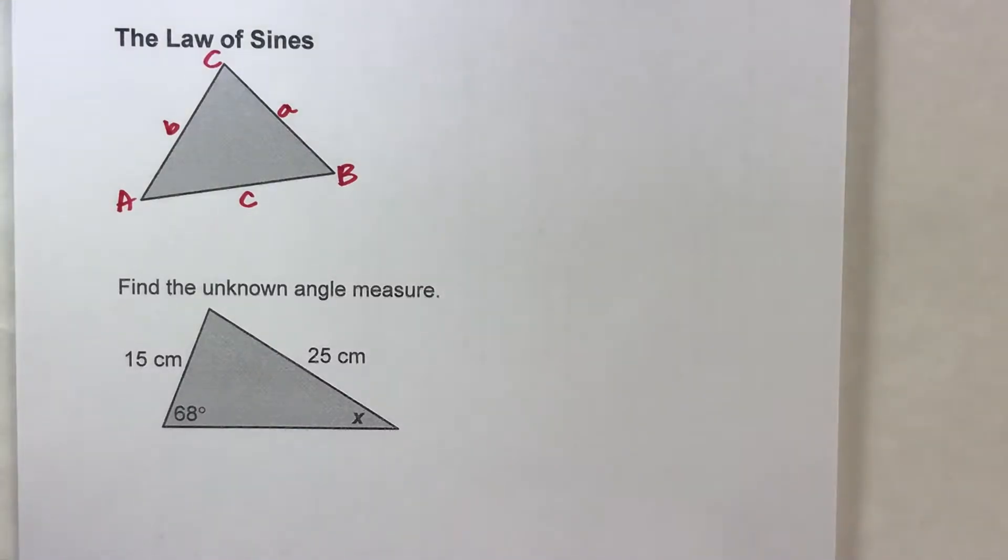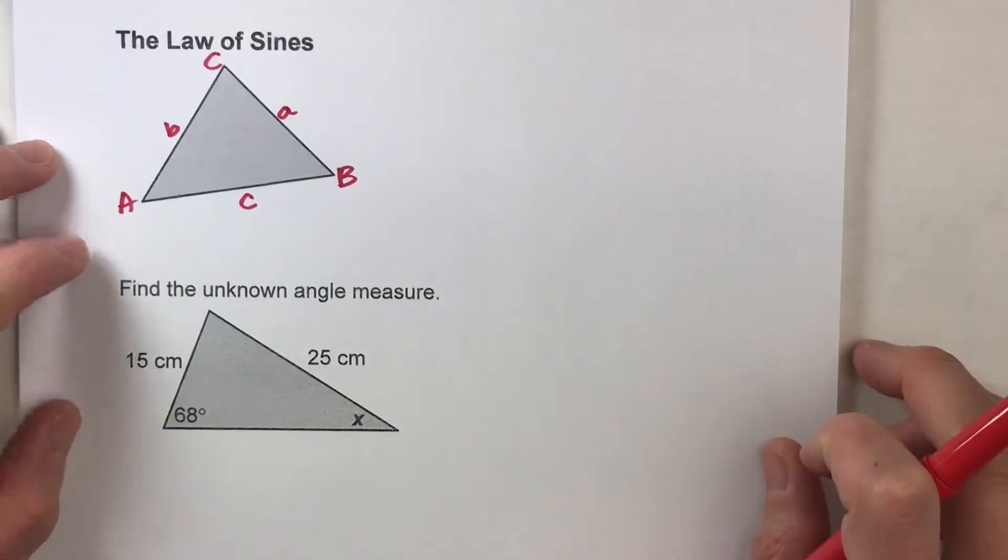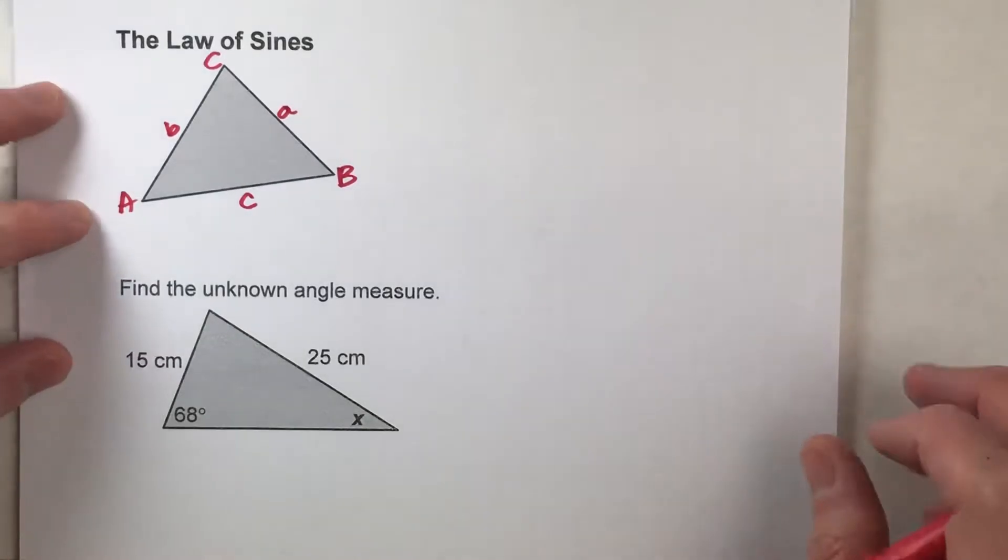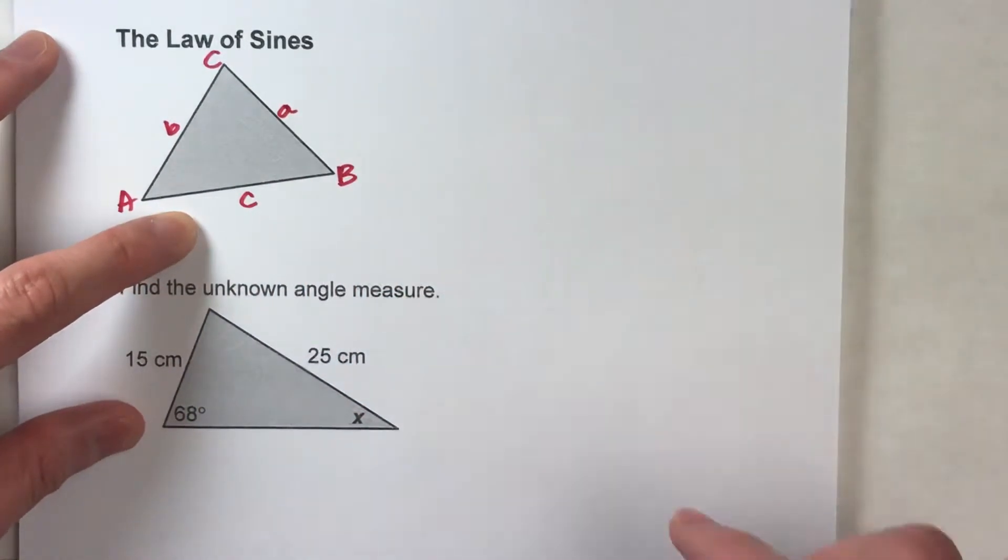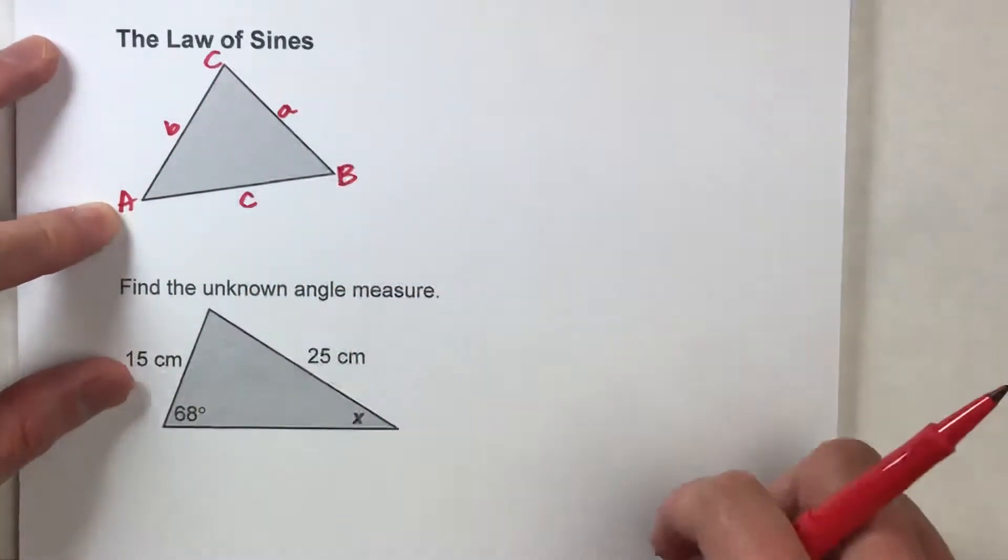Okay, so today we are using the law of sines to find an unknown angle measure. Now, the cool thing about the law of sines is that you don't need a right triangle to make it work. It works with any triangle.